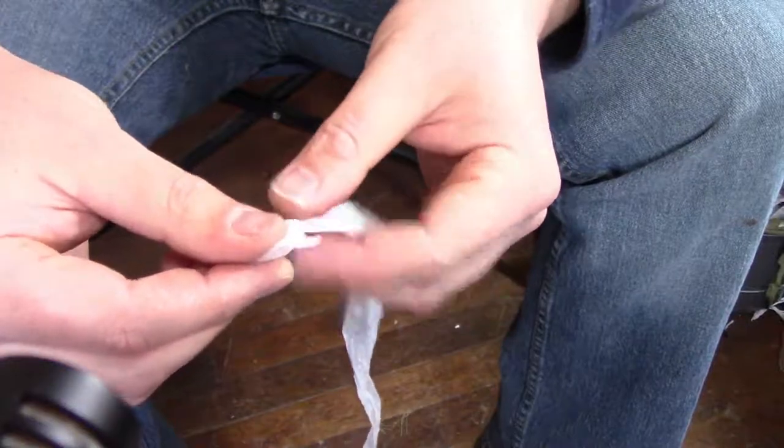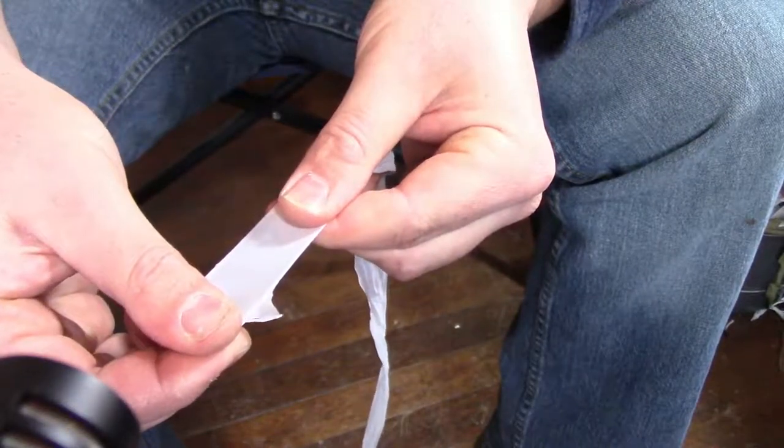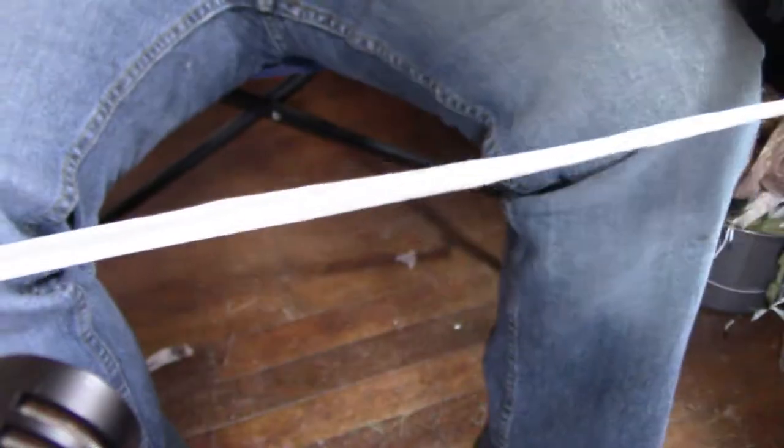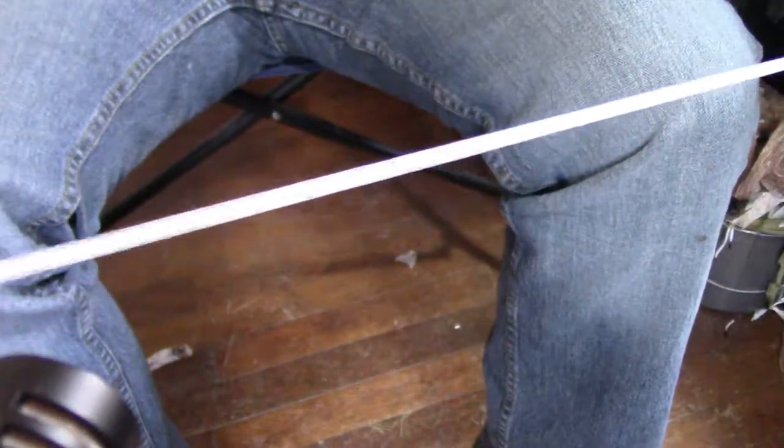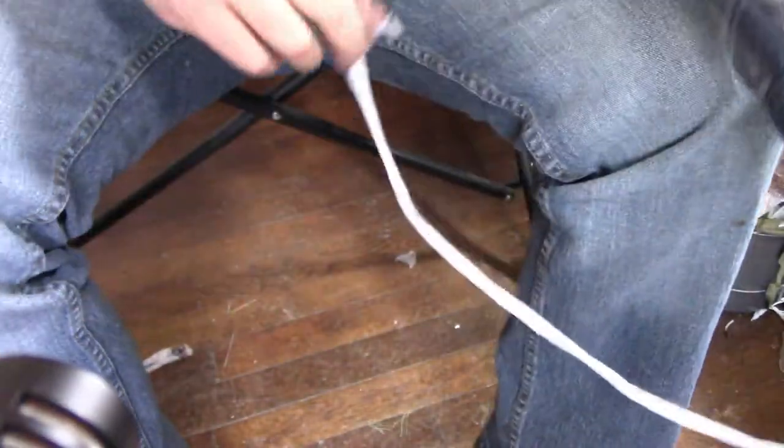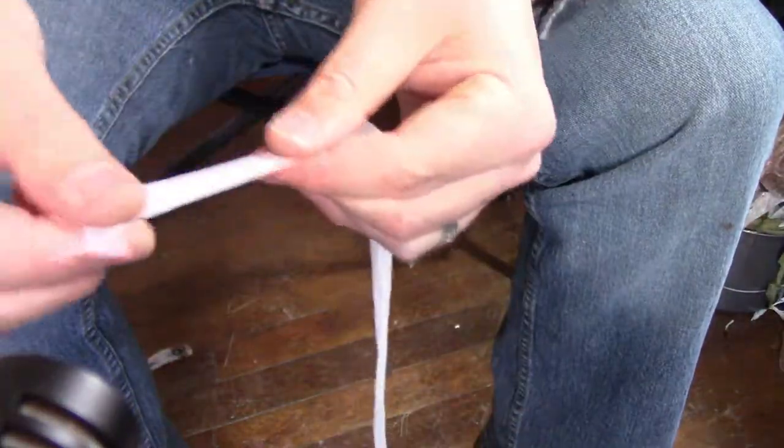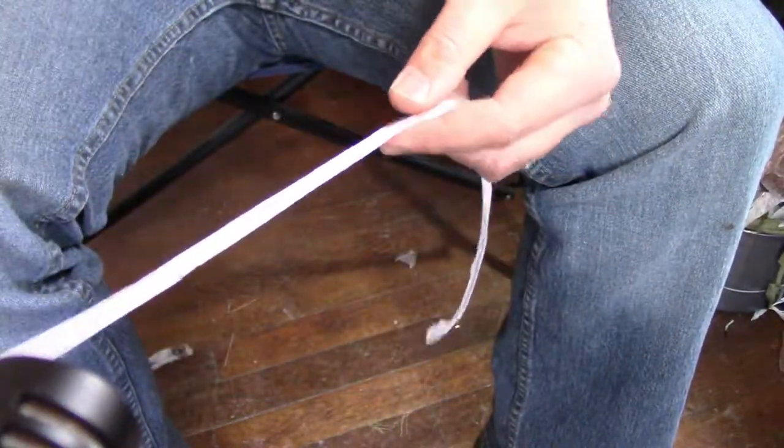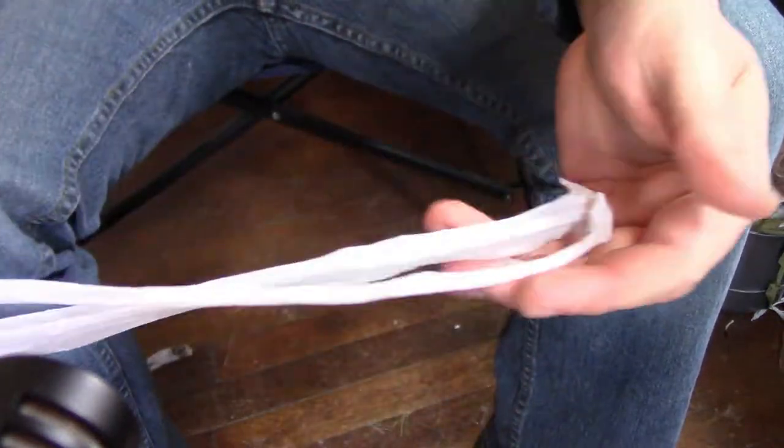But you can see that small little piece of bag has now actually turned into a pretty large section of plastic. There we go, that's about all I'm going to get out of that. I'll usually give the whole thing one good tug just to make sure everything is nice and stretched.